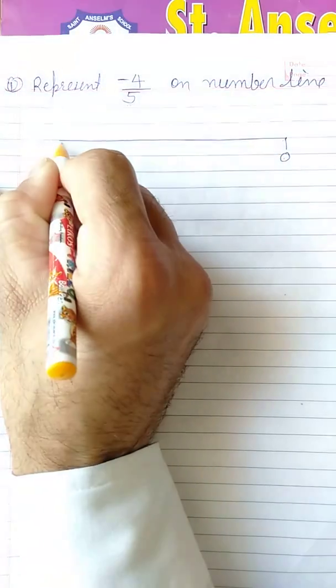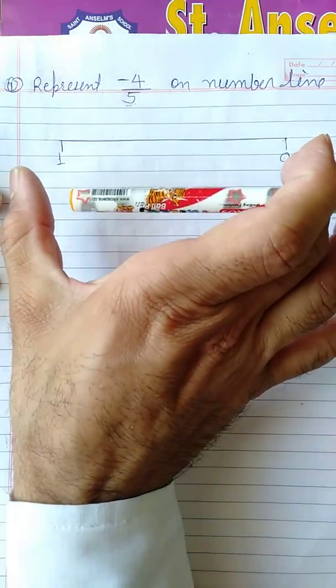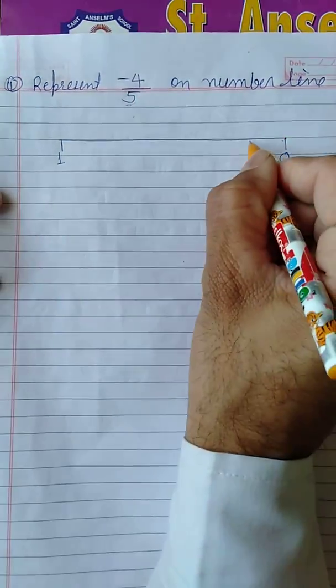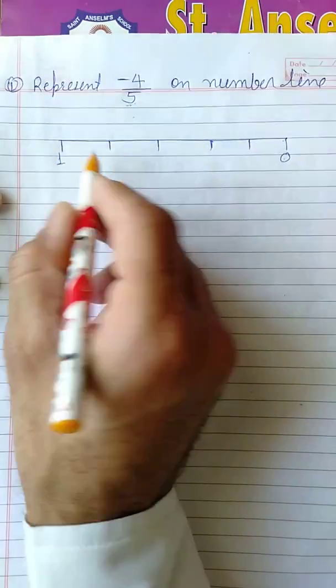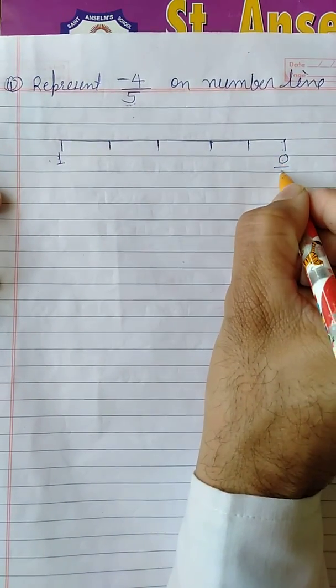Now see the denominator - what is the denominator? Five. So we will divide this into equal five parts. We will take here zero and here we will take one. This one is divided into five equal parts.